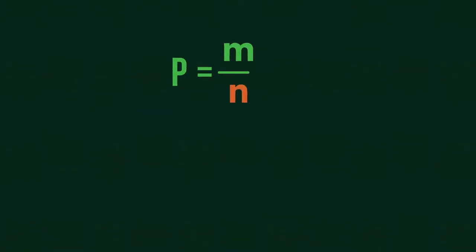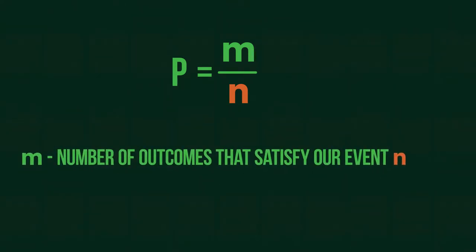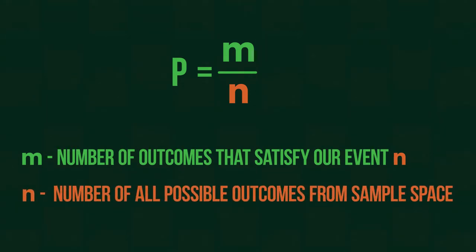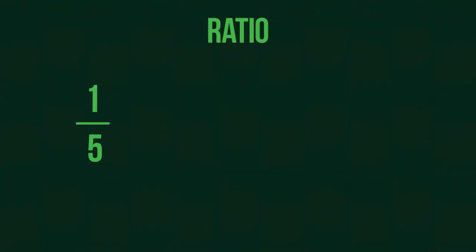If you watched part 1 of the probability basics, you would probably know that probability is a ratio between the number of successful outcomes and the number of all outcomes. As you may know, ratio is just a number, so it can be expressed in different ways as a fraction, a decimal or using percentages.